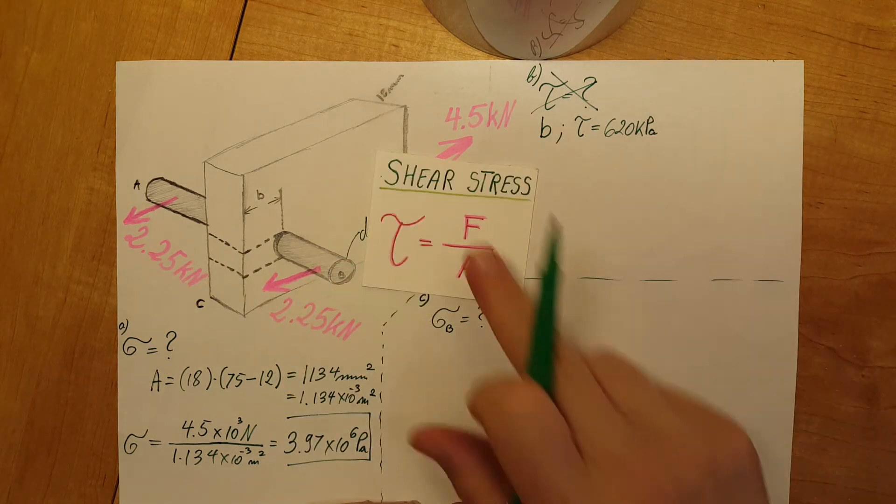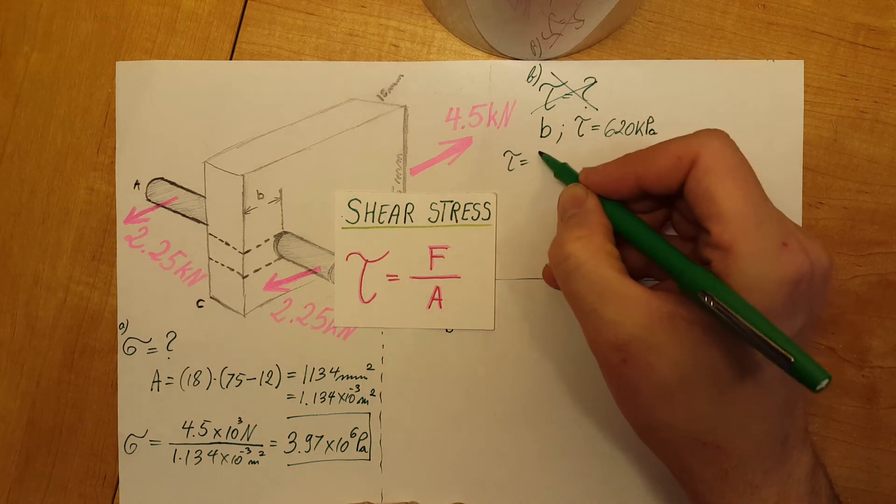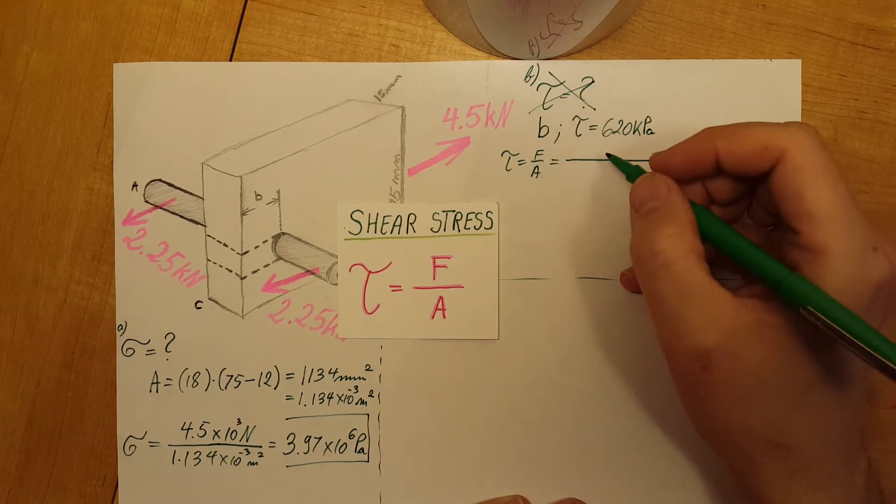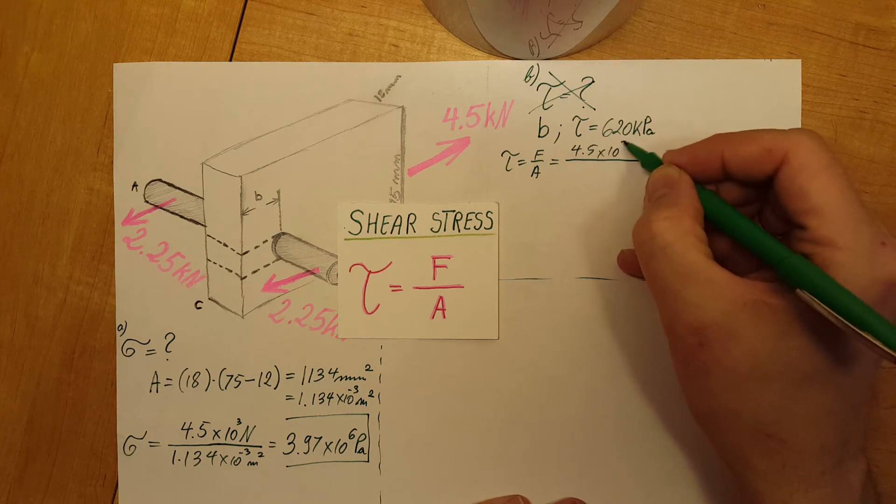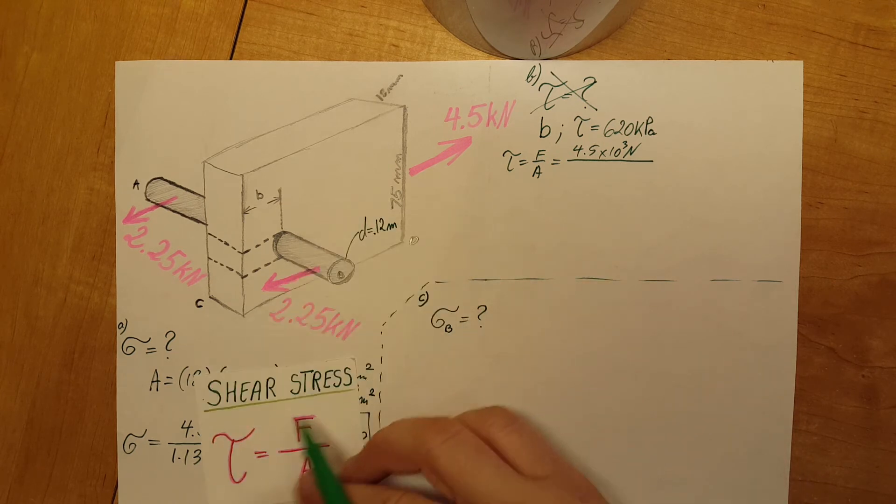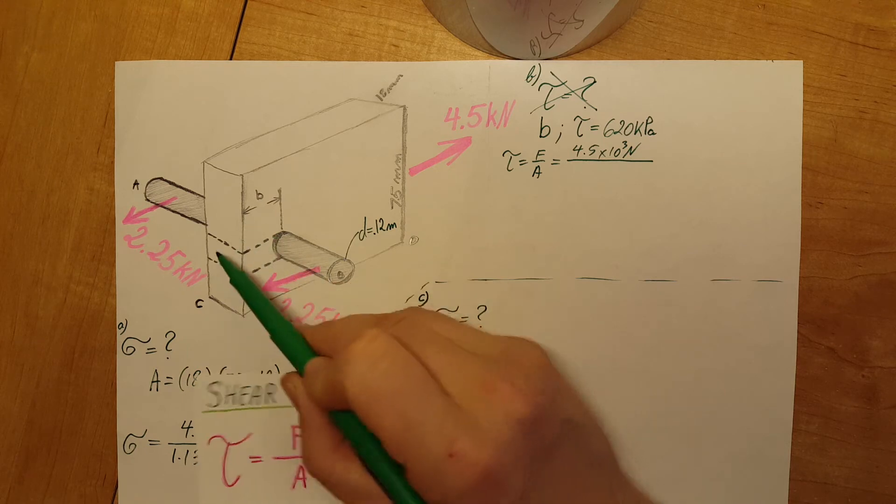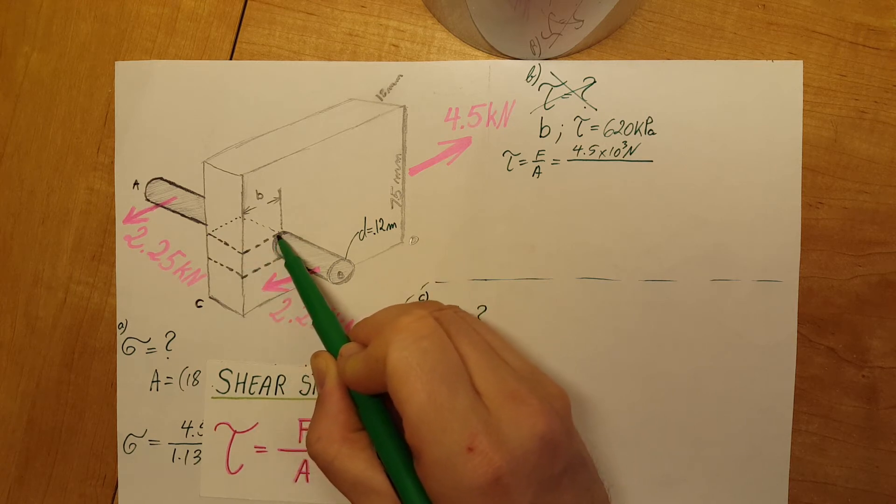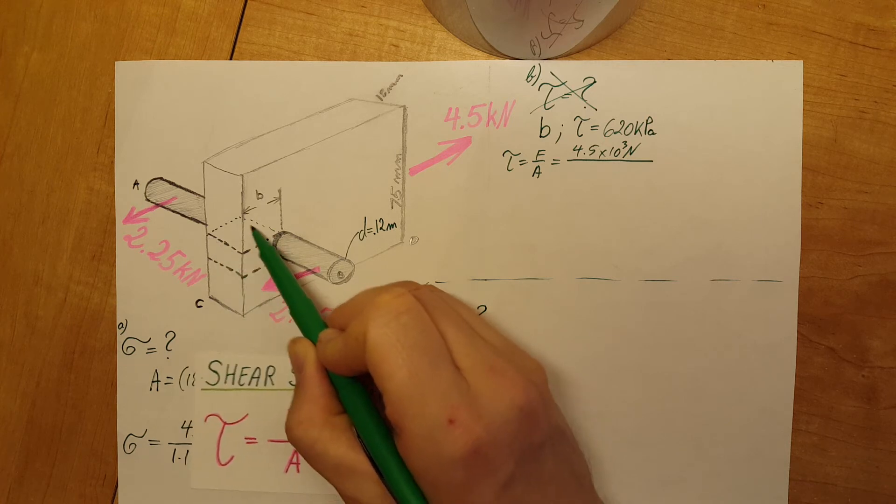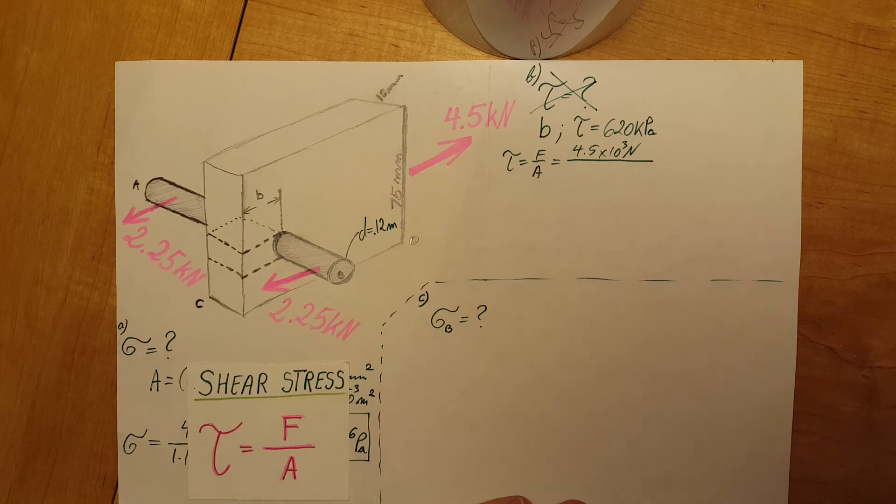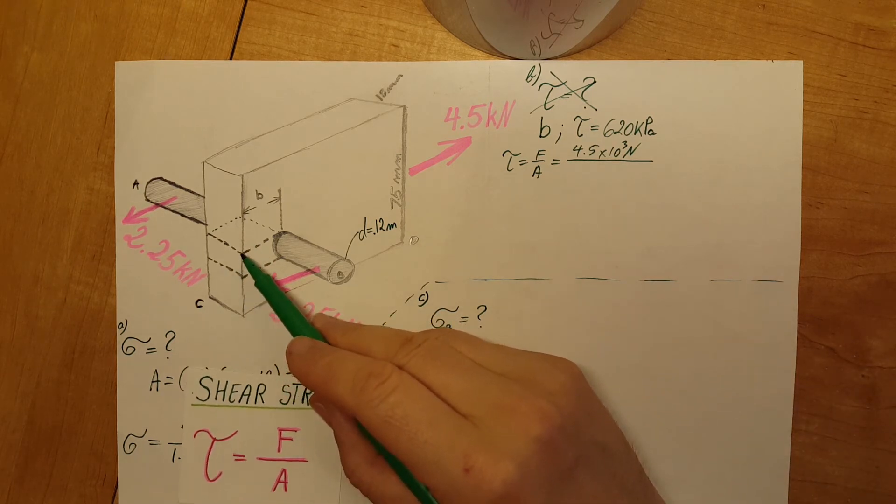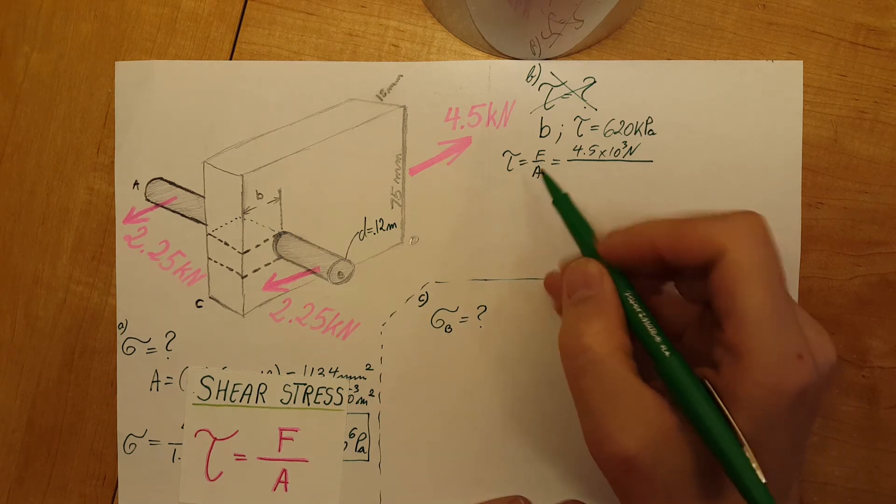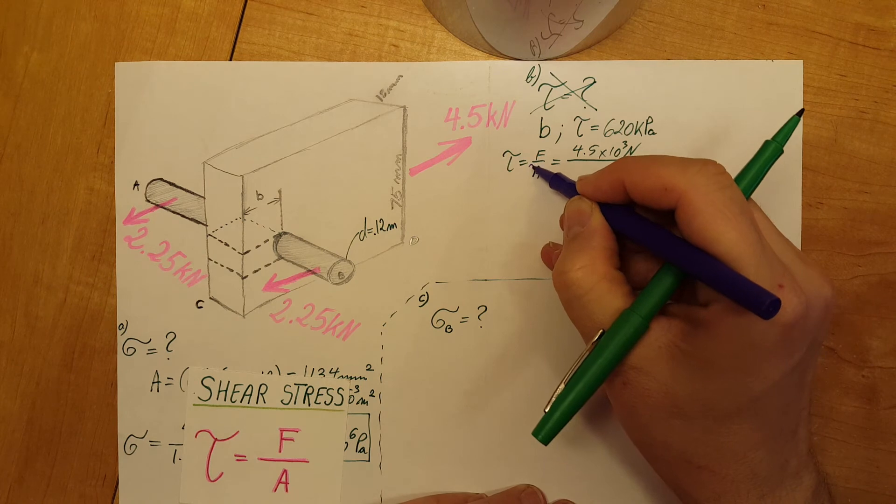Shearing stress formula: tau equals force over area. Here we know the force, 4.5 times 10 to the third newtons. Now the area will be the highlighted area that they wanted us to find, which is this section from the edge all the way to the rod and to the other side and back. This little rectangle is what they want us to focus on, and this piece has two sides, top and bottom, so we're going to have to calculate considering both of those.